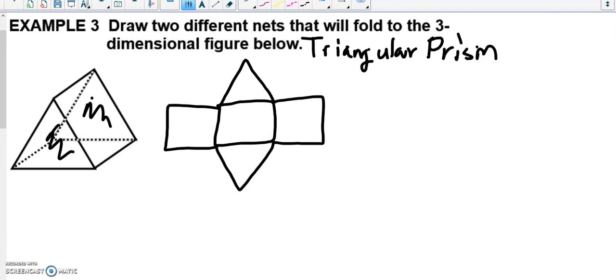Now, I'm going to change it a little bit and show you that we can actually have two different nets that will work and make the solid. Sometimes you can even have multiple ones.